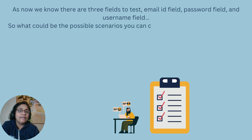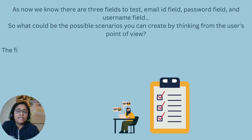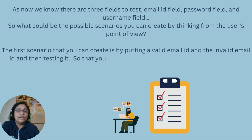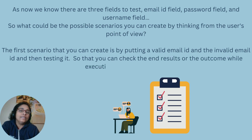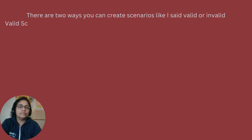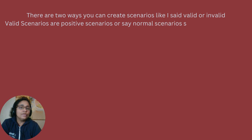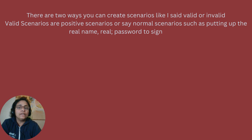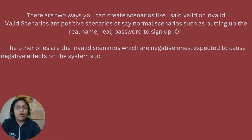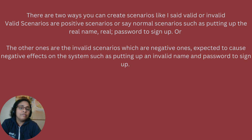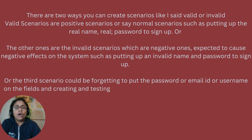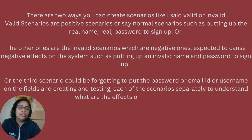What could be the possible scenarios you can create by thinking from the user's point of view? The first scenario is putting a valid email ID and an invalid email ID and testing it to check the end results while executing the test scenarios. Valid scenarios are positive or normal scenarios, such as putting in a real name and real password to sign up. Invalid scenarios are negative ones expected to cause negative effects on the system, such as putting an invalid name and password, or forgetting to fill in the password, email ID, or username fields.